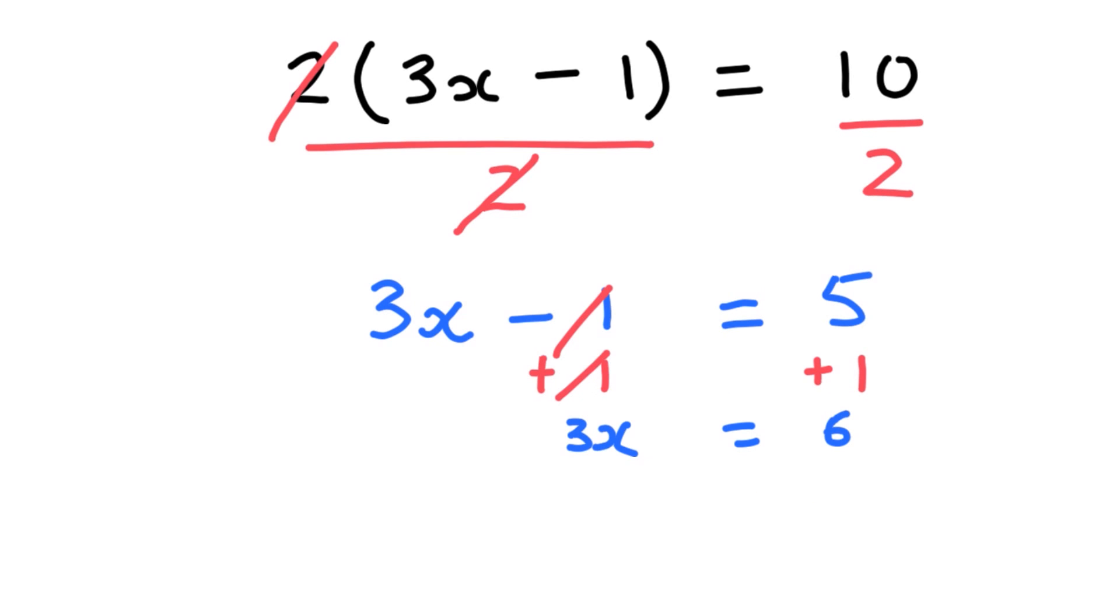Now I have 3x, which is really 3 times x. So I do the opposite, which is divide by 3 on both sides. When you have 3 on top, 3 on the bottom, they cancel. And I'm left with just an x on the left side. And it's equal to 6 divided by 3 is 2. So just another method to solve something. You should be comfortable solving things in multiple ways.